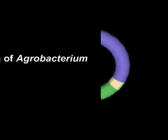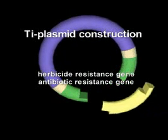This video is an illustration of the mechanism of agrobacterium using the genes for herbicide and antibiotic resistance. The genes are first inserted into the Ti plasmid between the left and right borders.